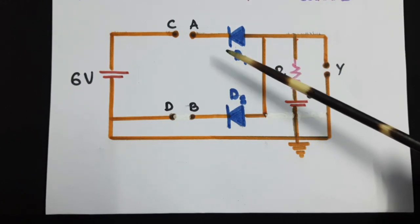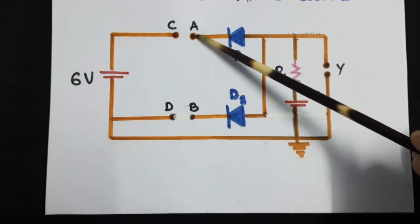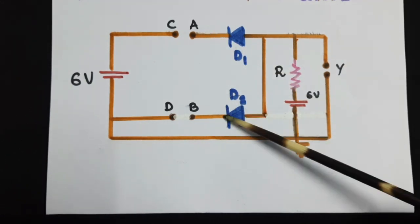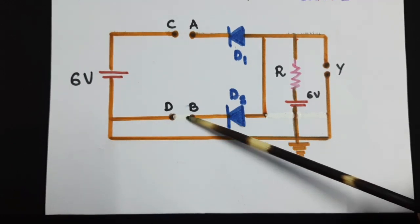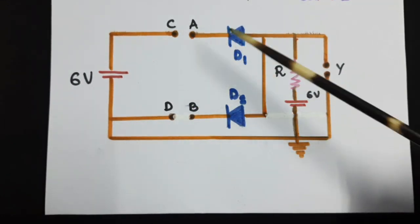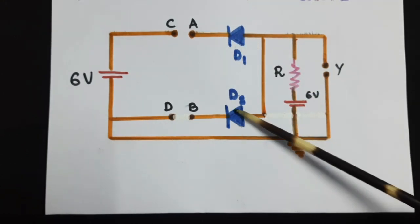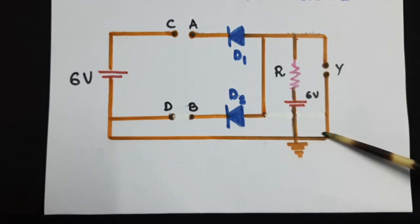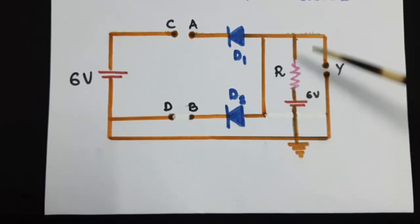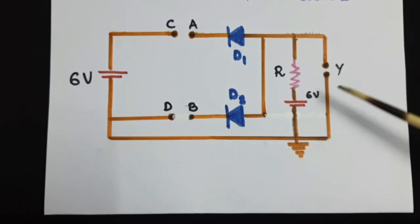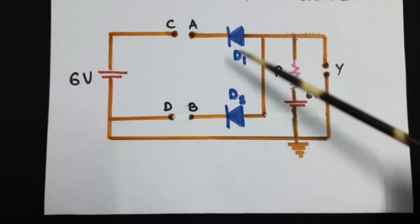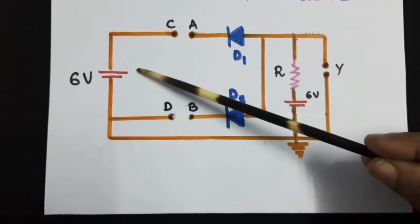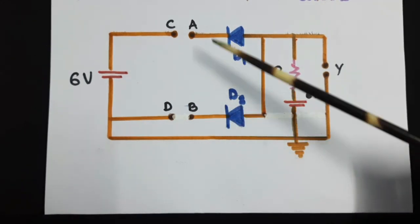So suppose we are connecting the negative terminal A of diode D1 and the negative terminal of diode D2, that is B, onto a positive potential. Then what happens is both the diodes will not conduct. As a result, at this output point we can experience this voltage as output. So you will get a high output when both diodes are connected at the input terminal to the positive terminal of the battery, or when the inputs are high.